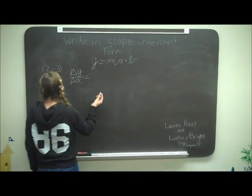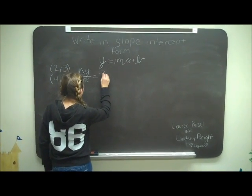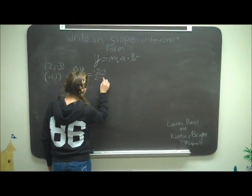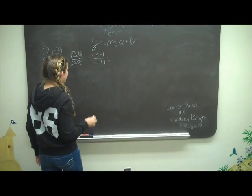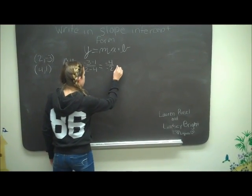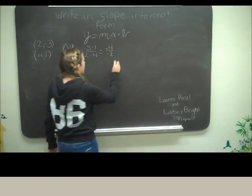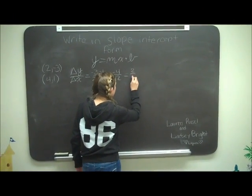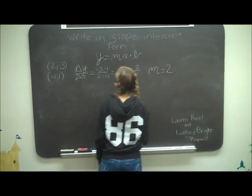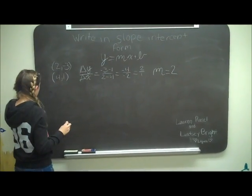That's -3 minus 1 over 2 minus 4, so you get -4 over -2, which equals 2 over 1, which is just 2. So the slope equals 2. Then you go back to the two points.